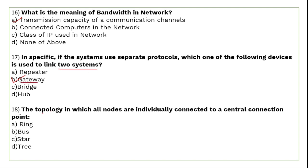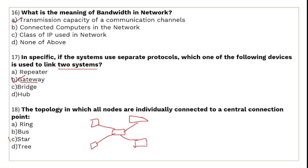The topology in which all nodes are individually connected to a central connection point is called star topology. All nodes are connected to the central point, which can be a hub or a switch. This arrangement is called star topology.